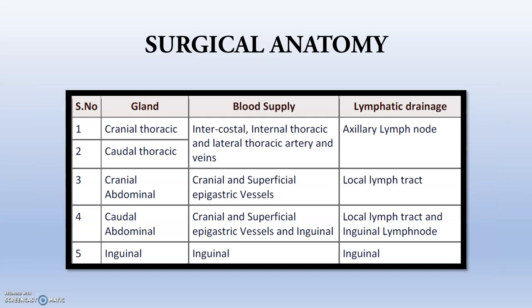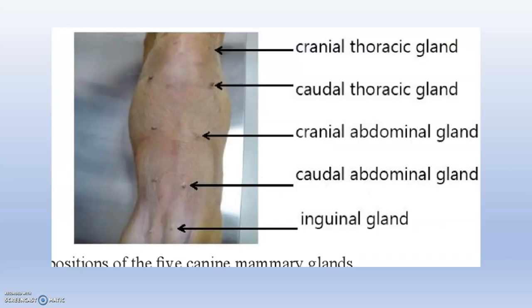Regarding surgical anatomy, there are 5 pairs of mammary glands: cranial thoracic, caudal thoracic, cranial abdominal, caudal abdominal, and inguinal. Each pair has specific blood supply and lymphatic drainage. These anatomical landmarks — cranial thoracic, caudal thoracic, cranial and caudal abdominal, and inguinal glands — are important for understanding tumor distribution and surgical planning.